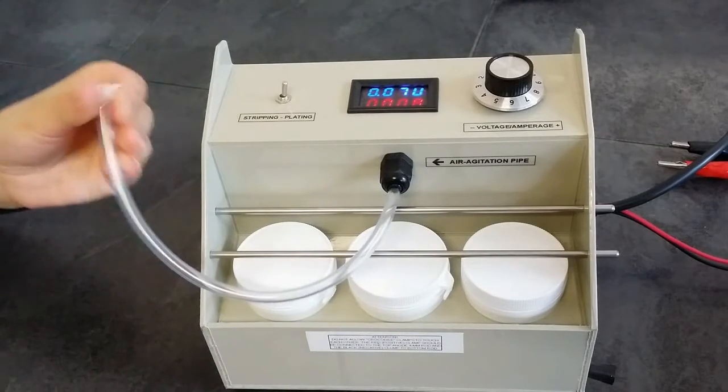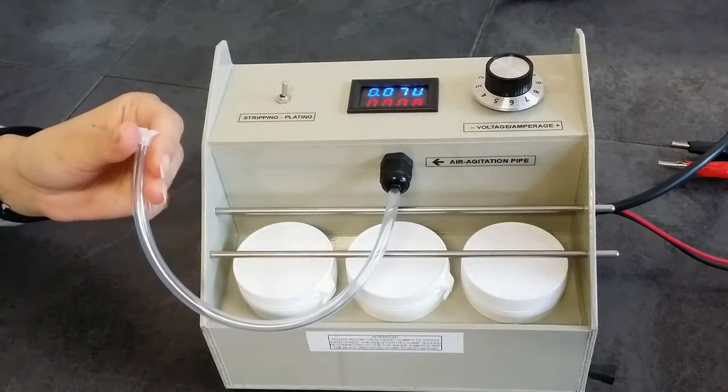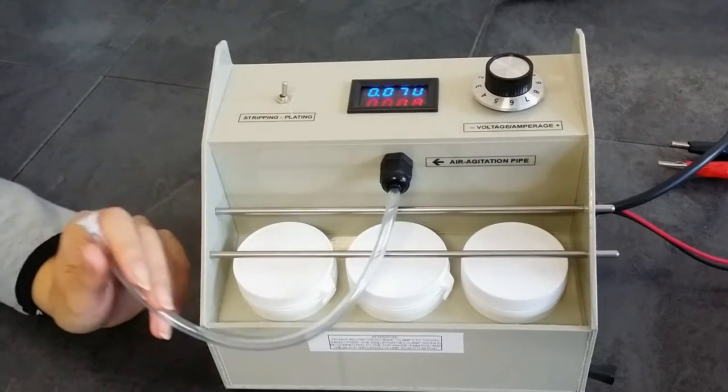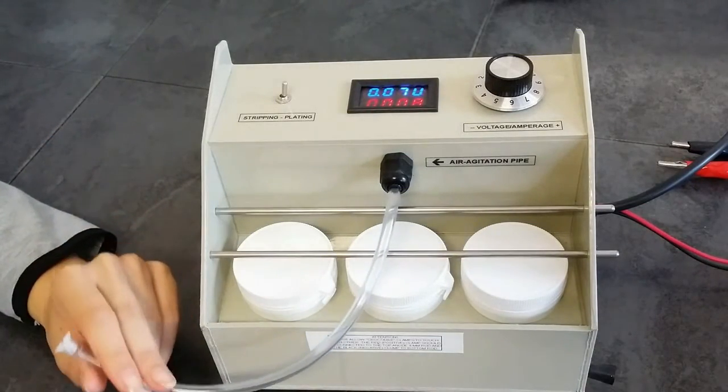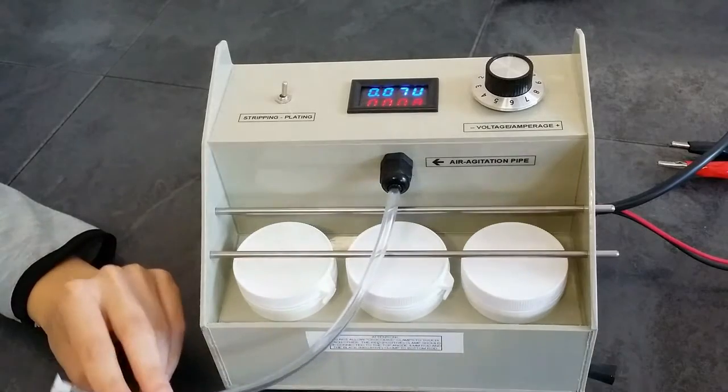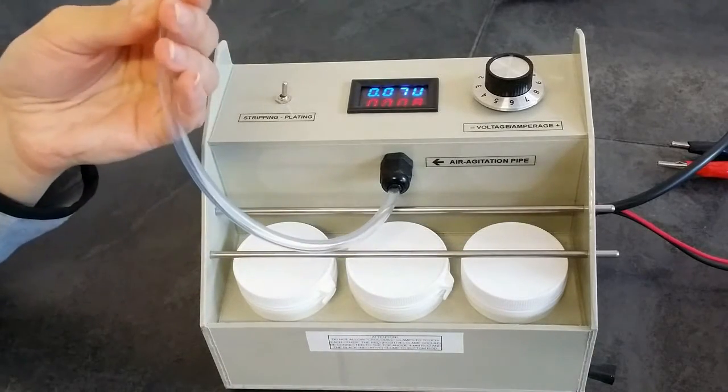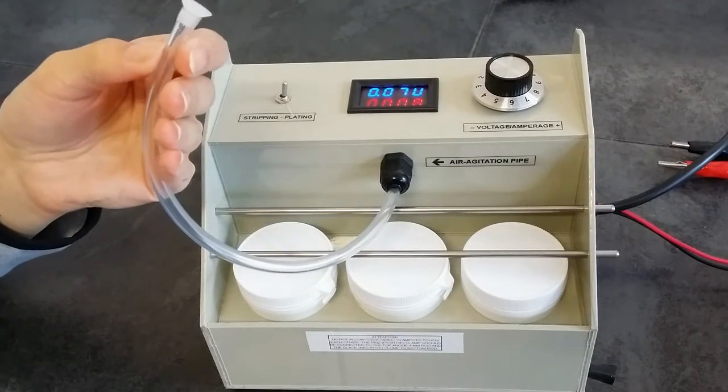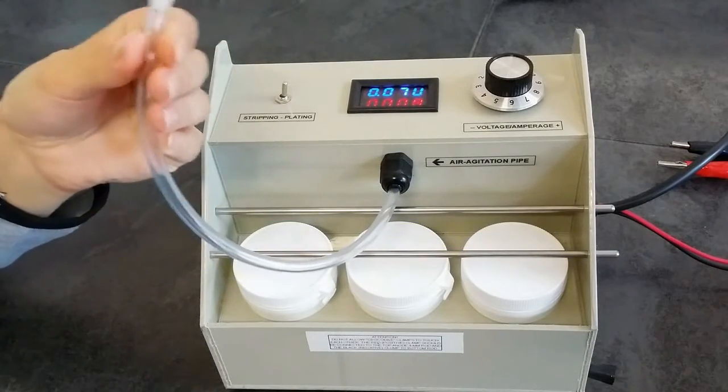Here is the agitation pipe which is used to mix up the solutions and to improve the quality of plating. It is also known to prolong the lifetime of your solutions. At the end of the pipe, there are micro holes through which the compressed air is entering the solution and mixes it up thoroughly.